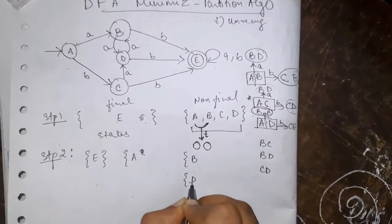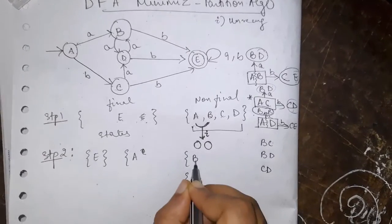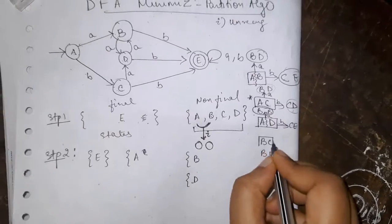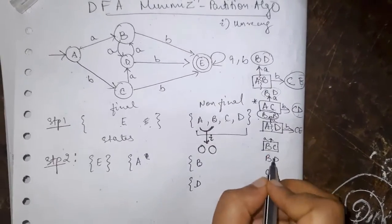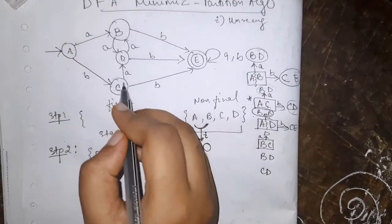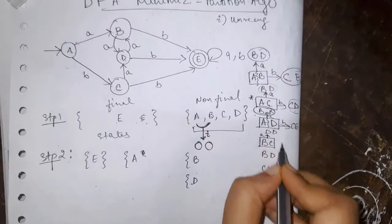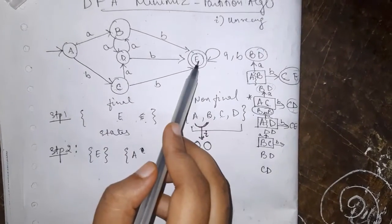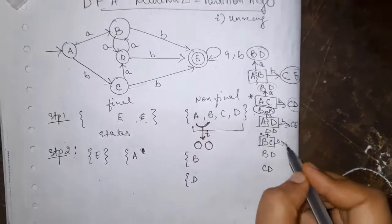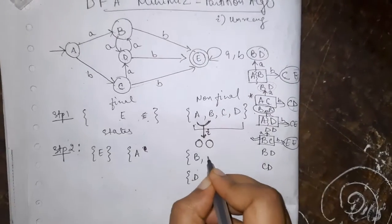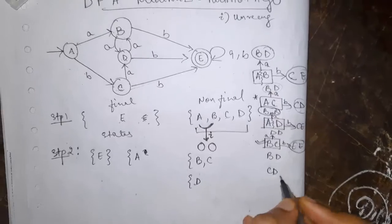Now this D will go to B or not that we don't know. We will check. For B C on giving A, for B it goes to D. For C on giving A goes to D. For B C on giving B goes to E. From C it goes to E. Therefore B C are same. So it can be written here.